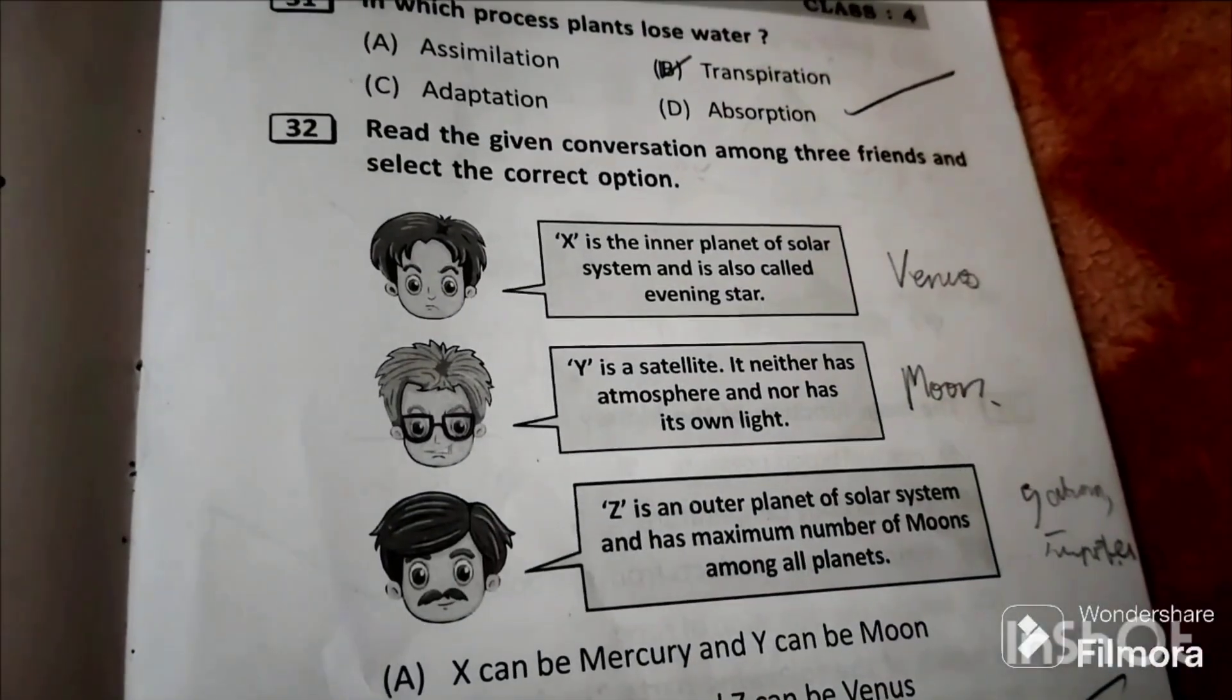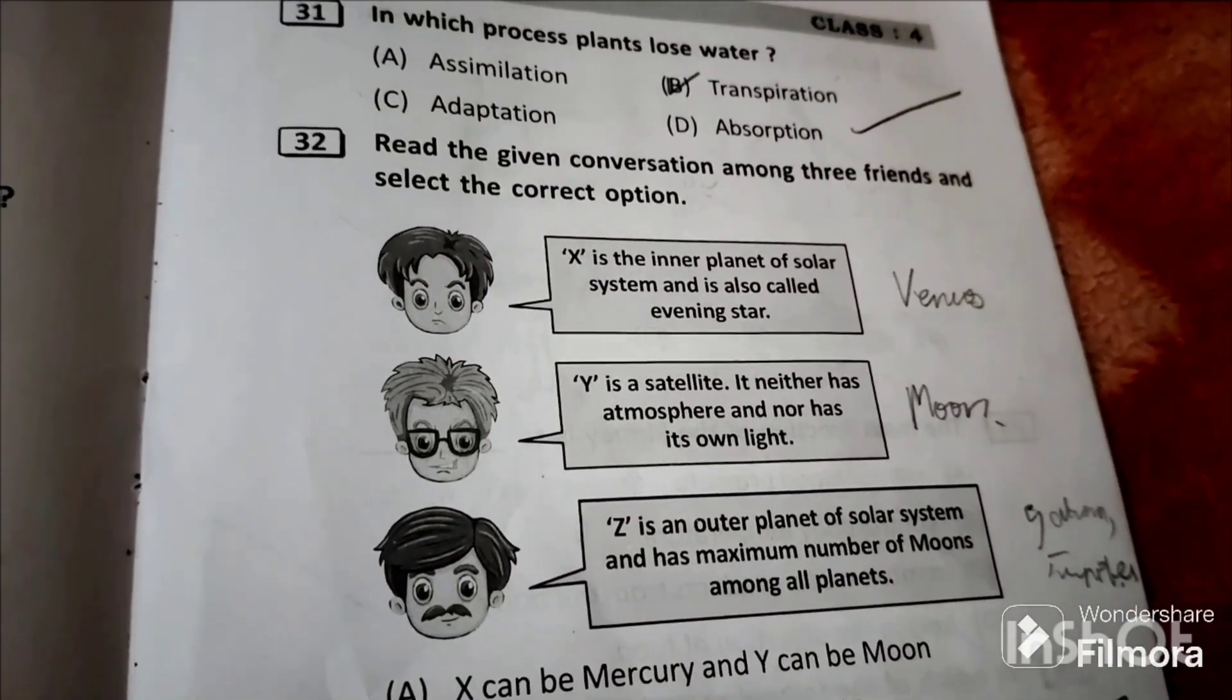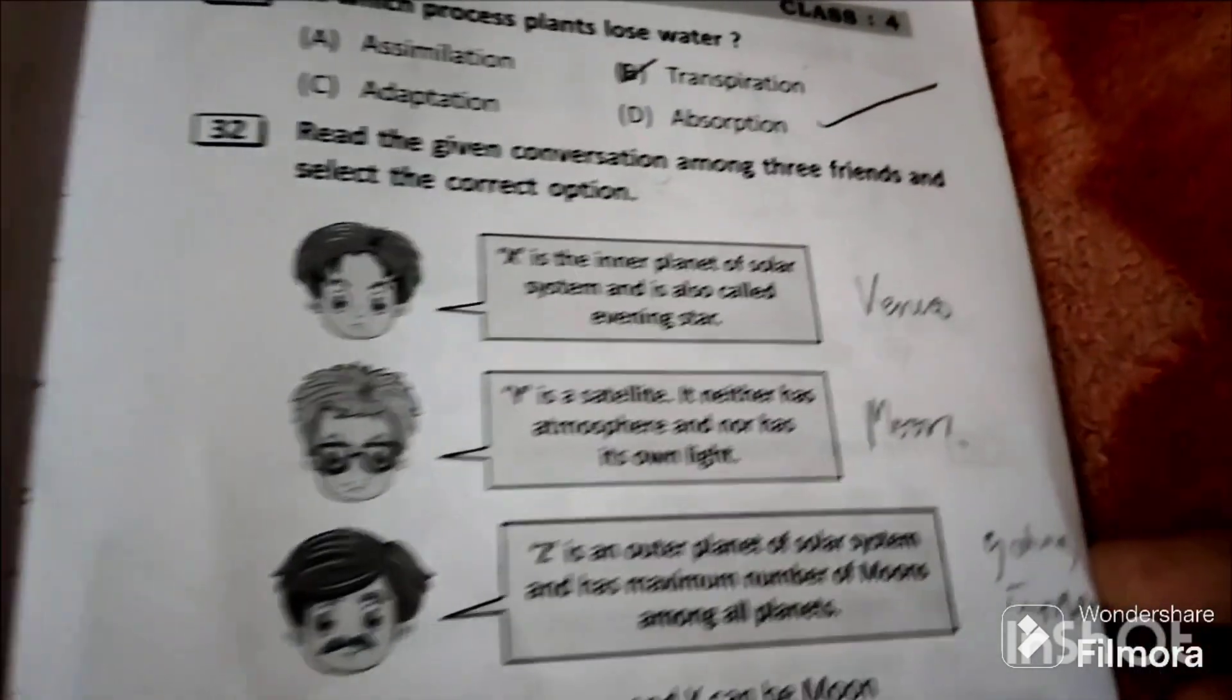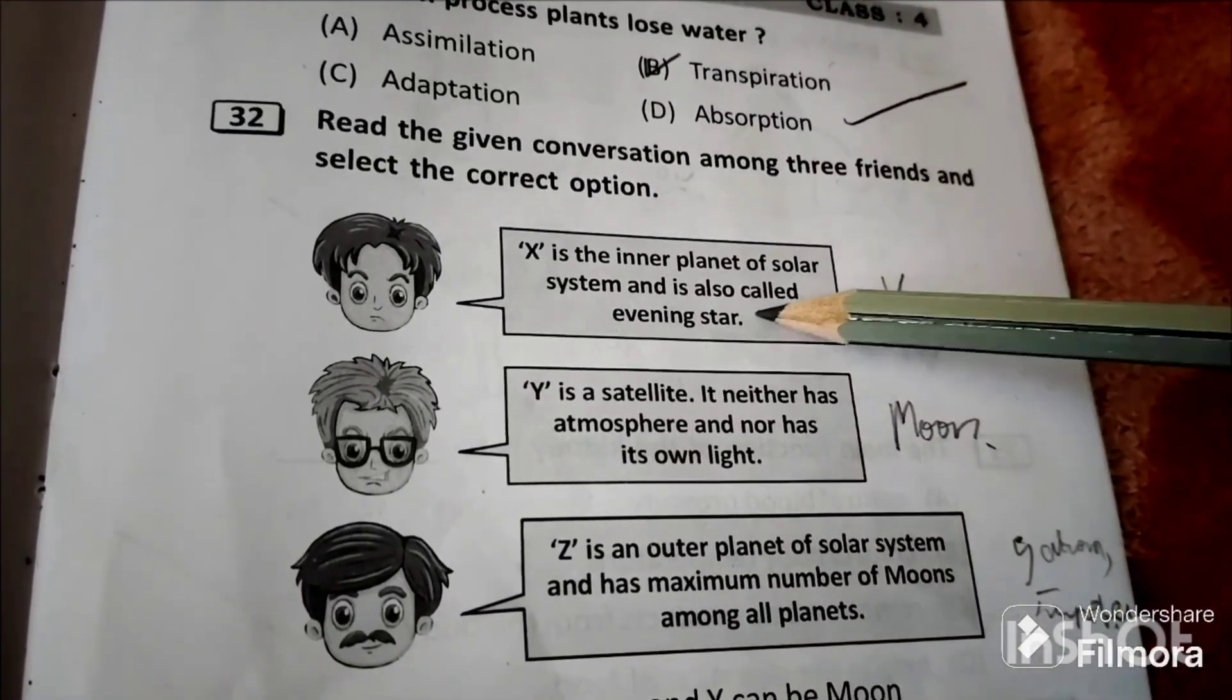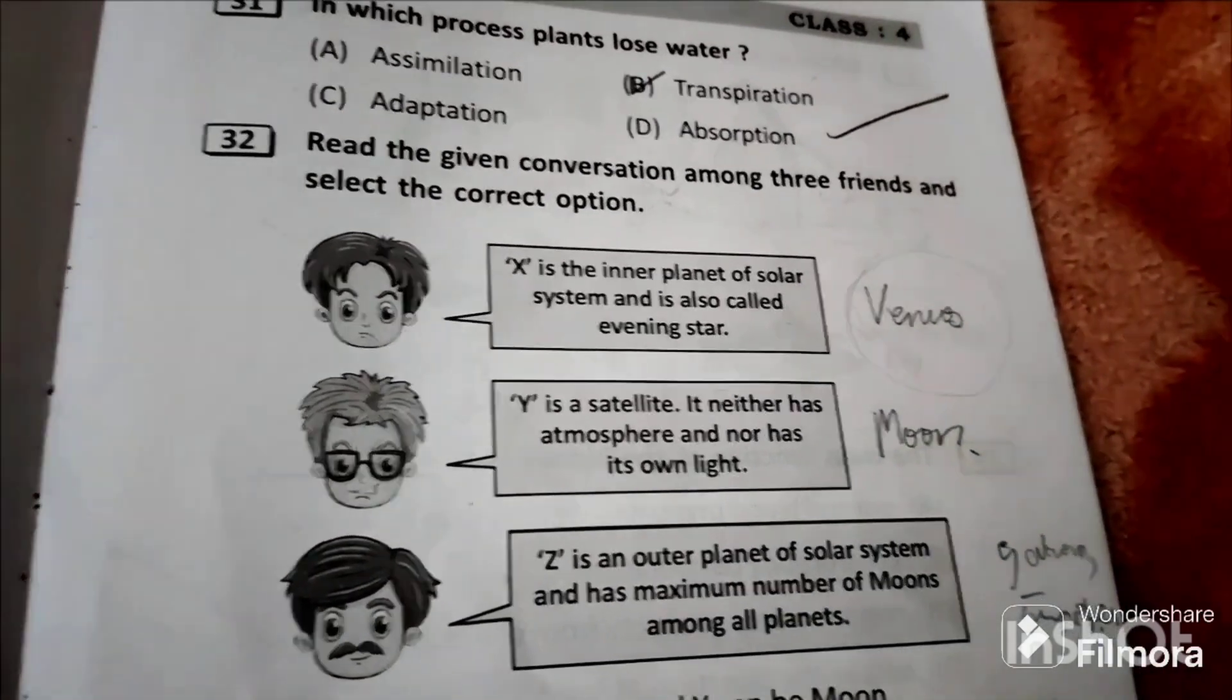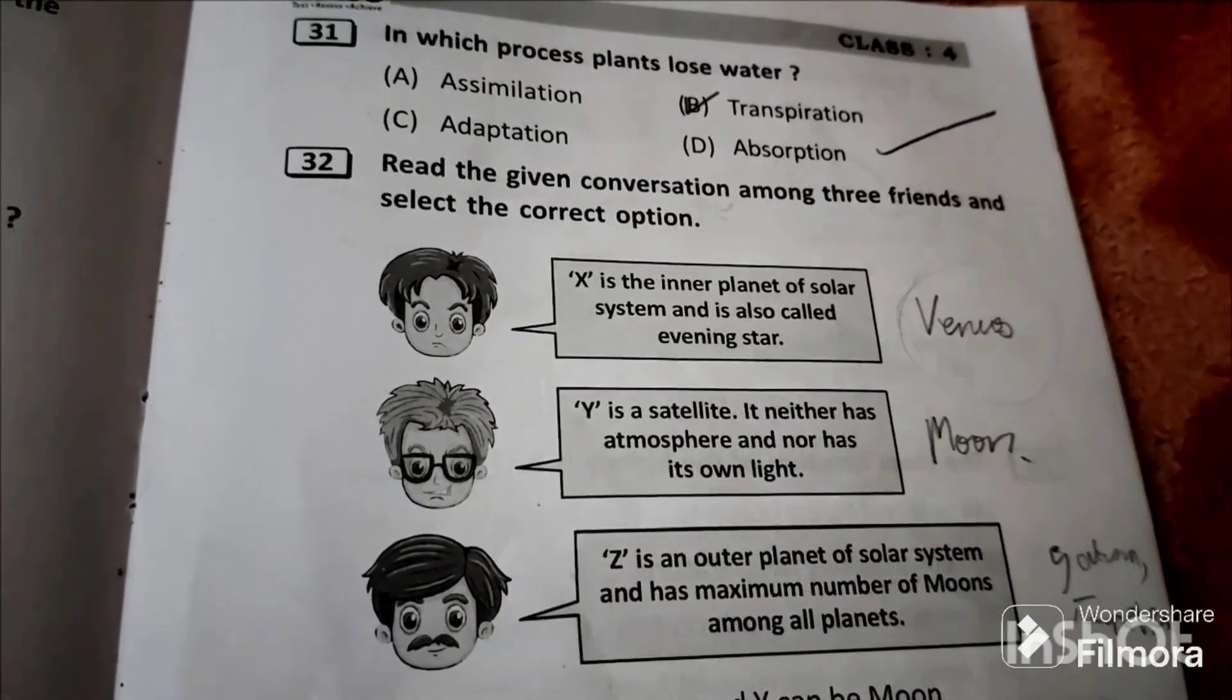Question 32: Read the conversation among three friends and select the correct option. X is the inner planet of solar system and is also called evening star, so Venus is the inner planet of solar system and it is known as morning star as well as evening star.